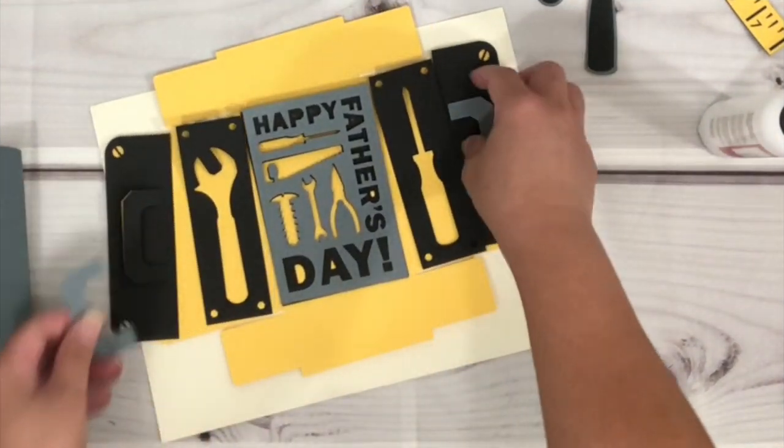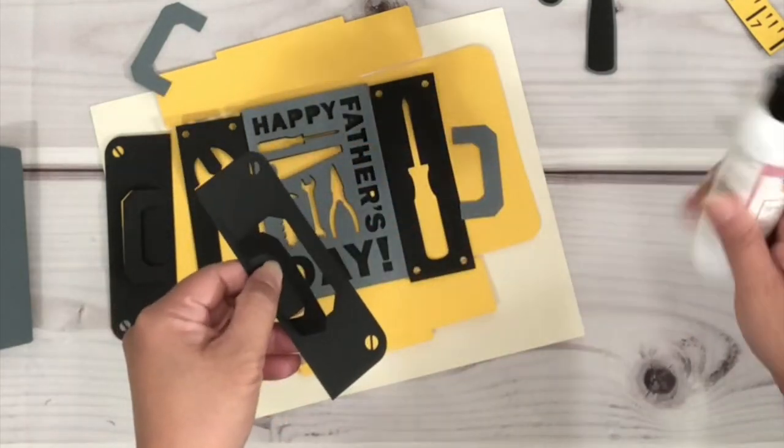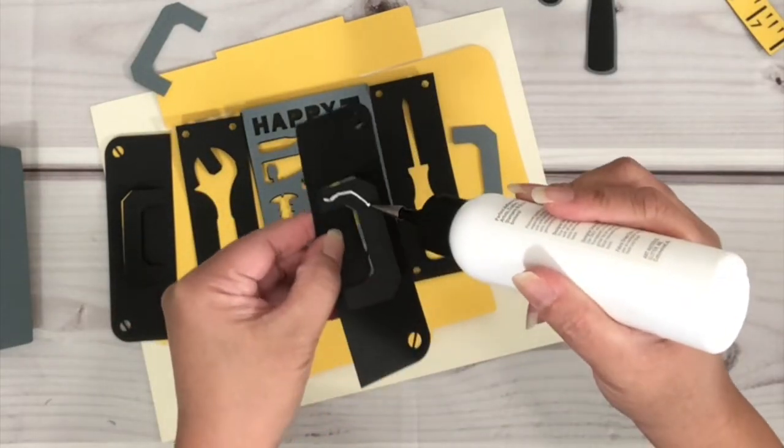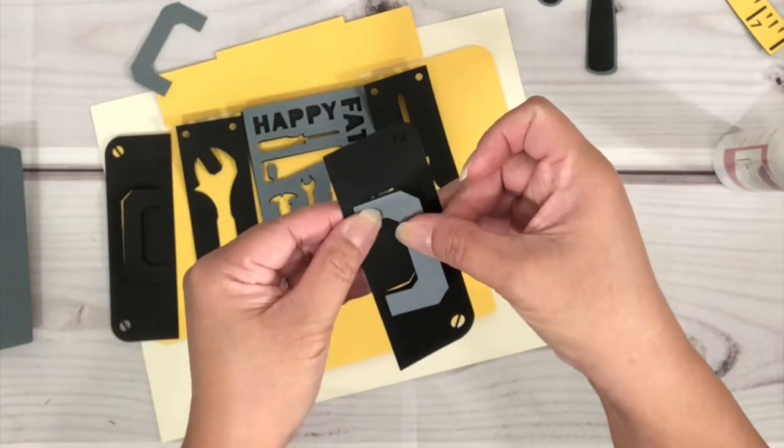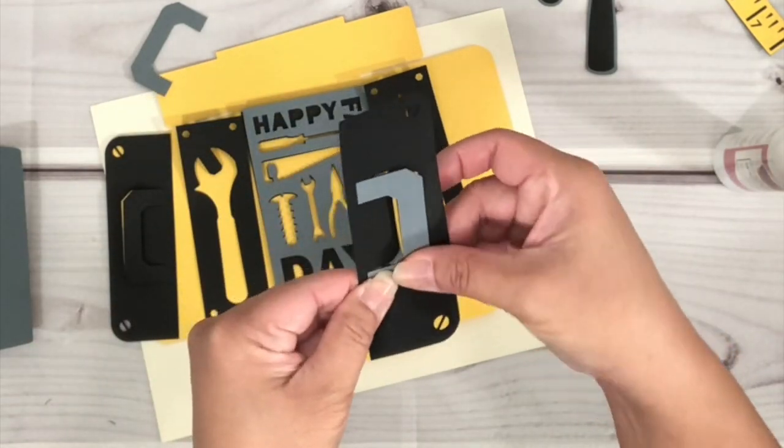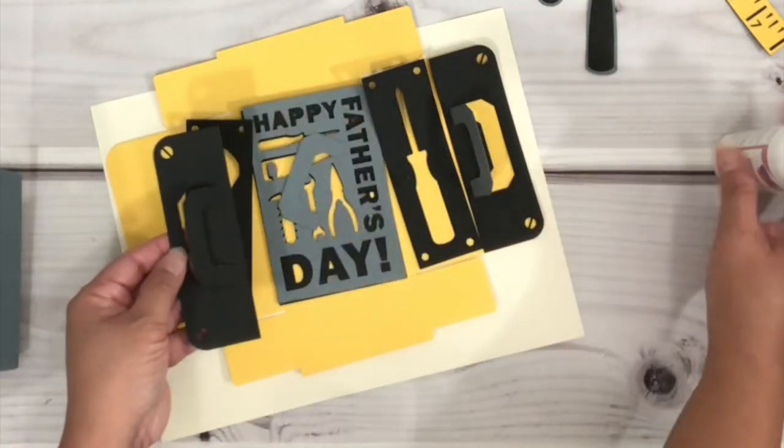Now that I've glued the tools together, this part right here there's a score line and I'm just going to fold it a bit to create some kind of dimension, add some glue and place the piece that belongs on top of it, then do the same thing on the rest of the pieces.